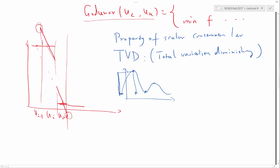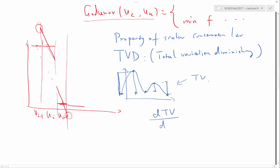You then add towards the next rise or fall, and continue adding each subsequent rise or fall. So the total variation is literally the total amount of variation the function has. The total variation diminishing property says that whether you integrate the conservation law analytically or use a good enough scheme, the time derivative of the total variation is going to be non-increasing.